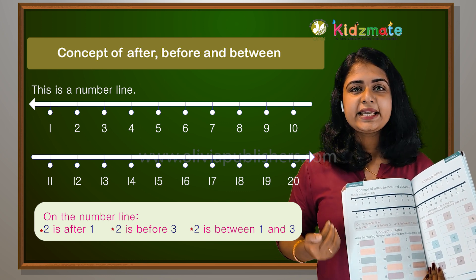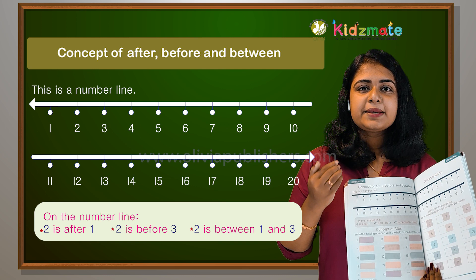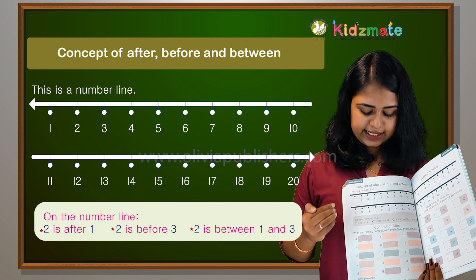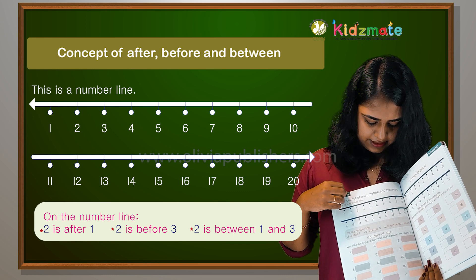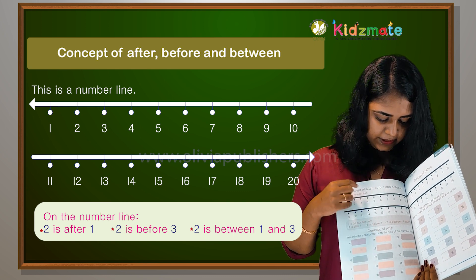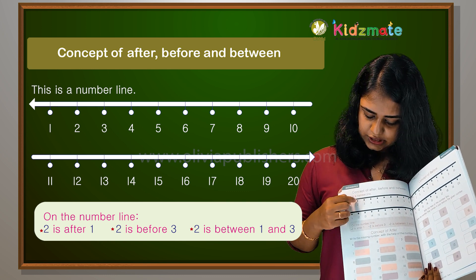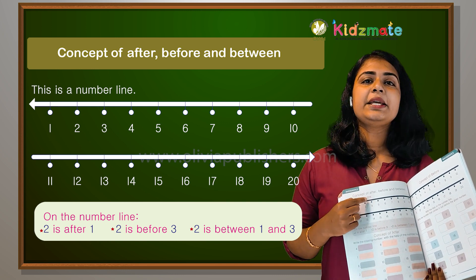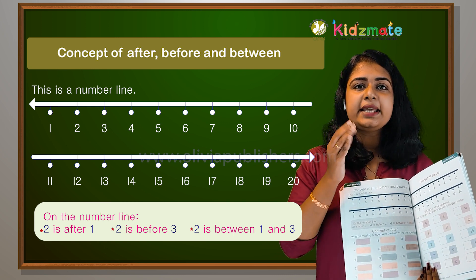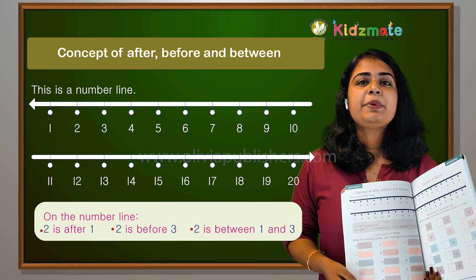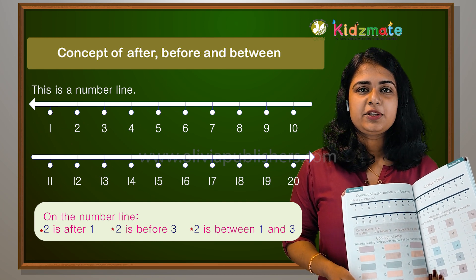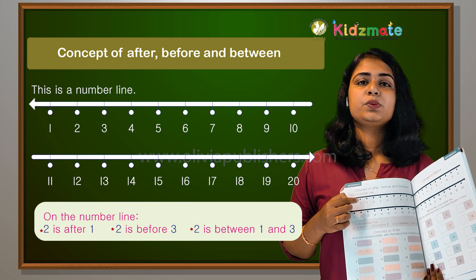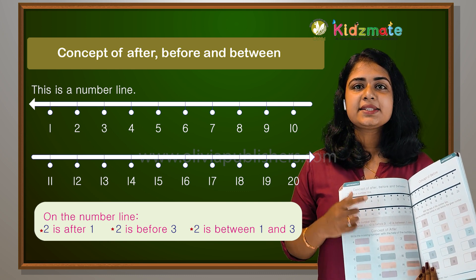Two is before three. Then, between. We will say 2 is between one and three. So, 2 is between one and three.